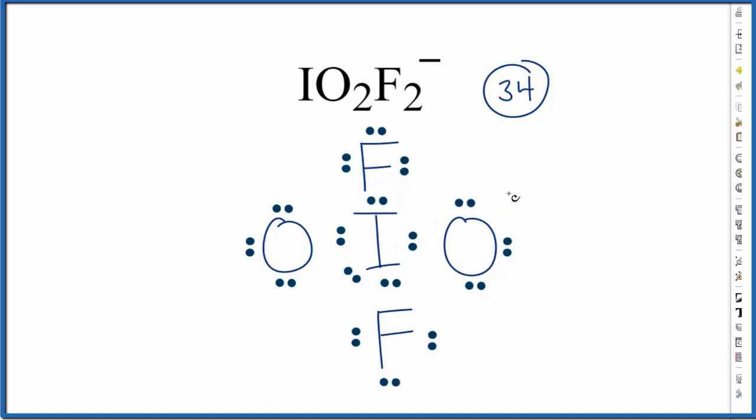The problem is if we look at the formal charges, we end up with each oxygen having a negative one formal charge and the central iodine has a plus one formal charge. These really aren't the optimal formal charges. We'd rather have these be closer to zero, or in this case we want it to be this one minus up here to match the charge on the ion. If you need help calculating formal charges, there's a link in the description and at the end of this video.